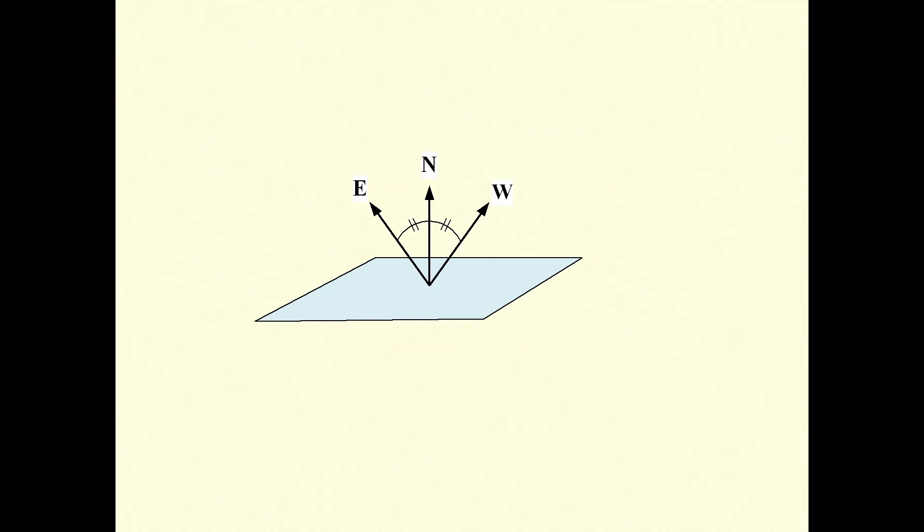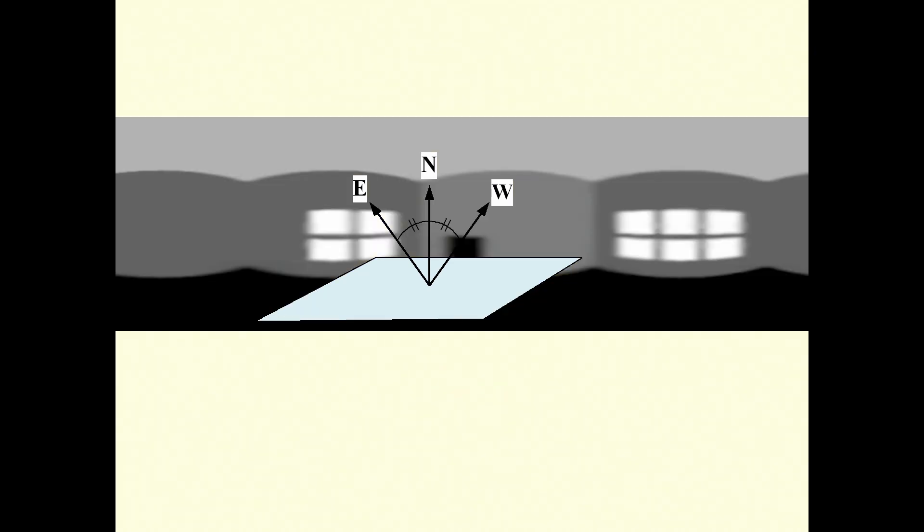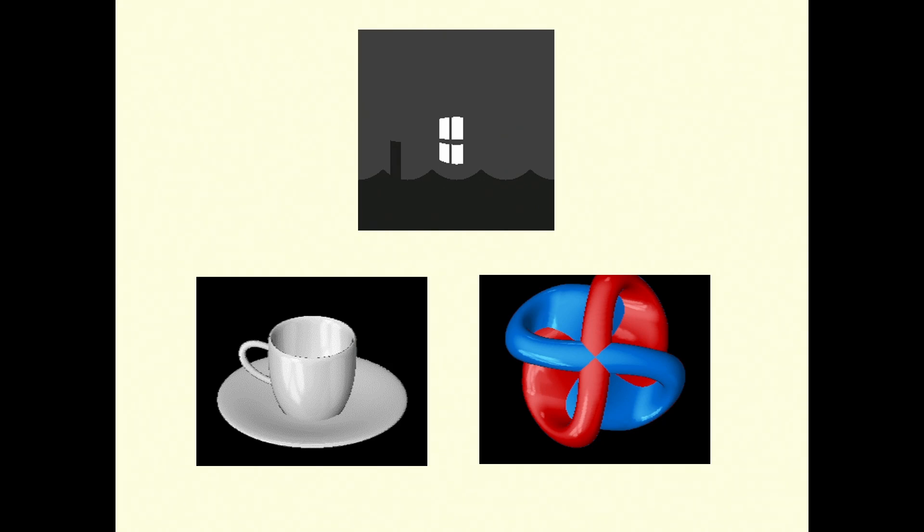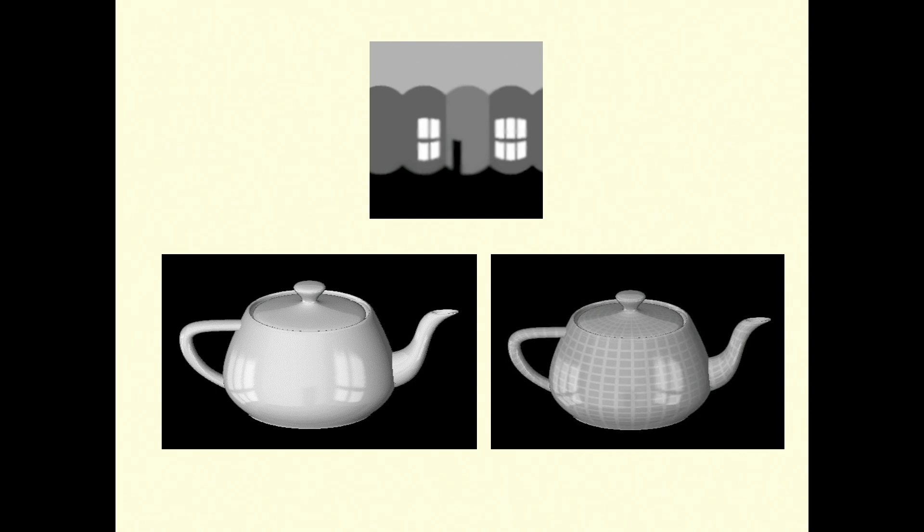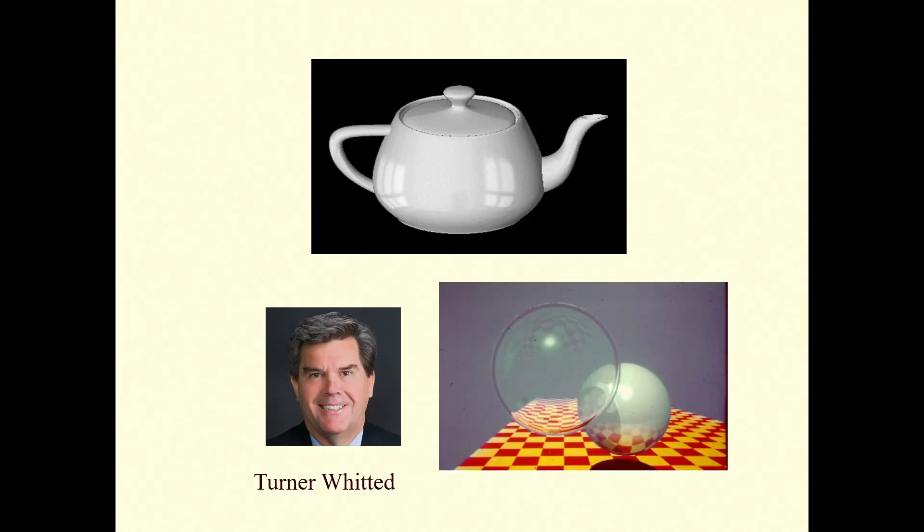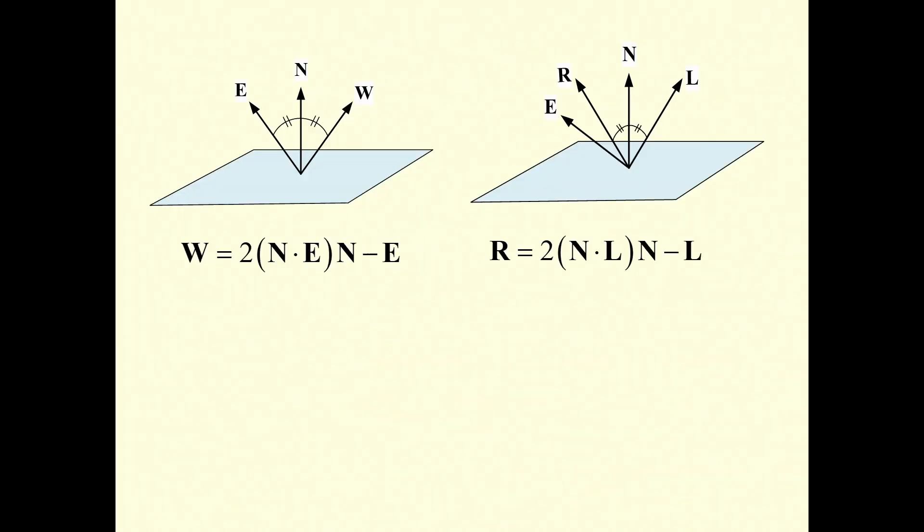So Martin came in one day and said, I just had this idea in the shower. Suppose you run the light ray backwards and bounce off the normal vector and project it out into the world. And if you have a map of how bright things are in different directions in the world, then you can generate an image with reflections in it. So I went down and implemented that. I had to calculate what is W as a function of E and N.